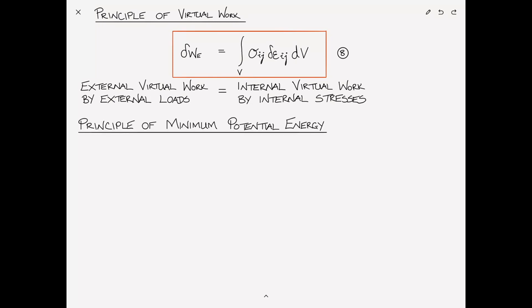This brings us to the principle of minimum potential energy. We want to take the principle of virtual work and put it into a form that incorporates a constitutive relation so that it's valid for elastic materials. We'll continue to limit things to small displacements, but it's valid for both linear and non-linear elastic materials. We proceed by defining the potential of the external work, V, which is the negative of the external work.